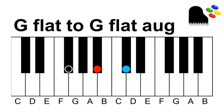Here we have G-flat major, and we're going to create an augmented chord. We just raise this top note — our fifth — up a half step, and of course the augmented fifth lands on a white key.